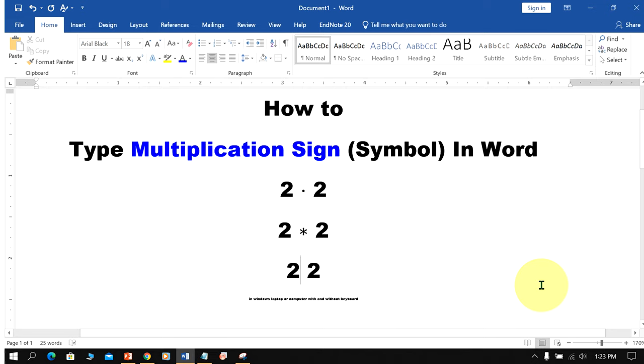For the multiply sign or symbol, type backslash times, then spacebar to type the multiplication sign on Windows laptop or computer.